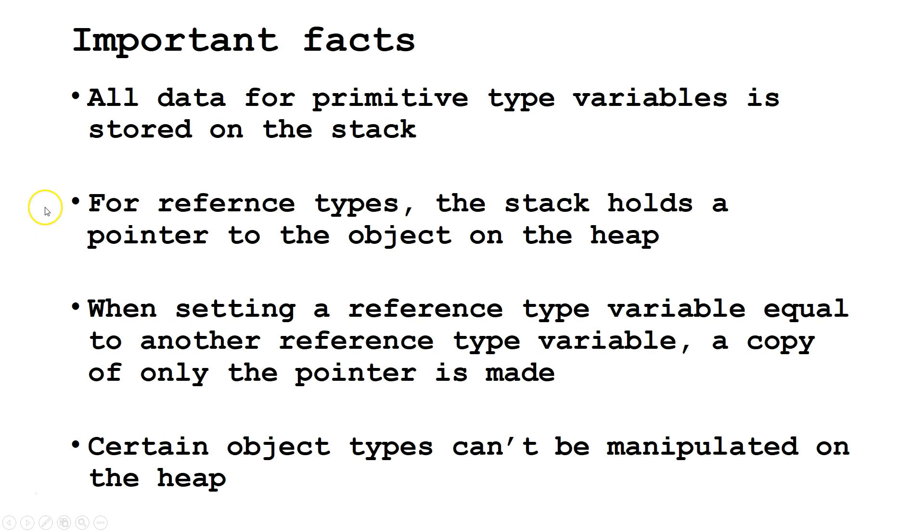Four important things to know. First, all data for primitive type variables is stored on the stack. Second, for reference types, the stack holds a pointer to the object which is on the heap.